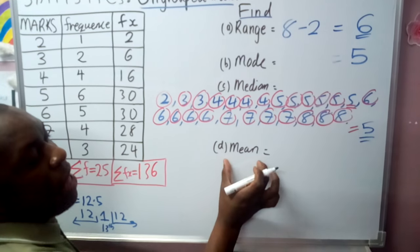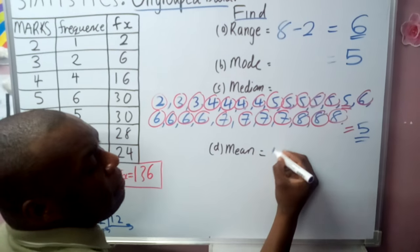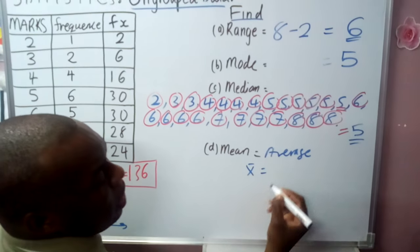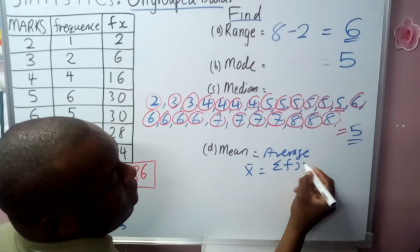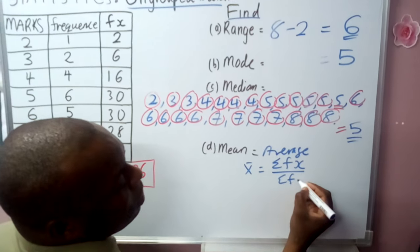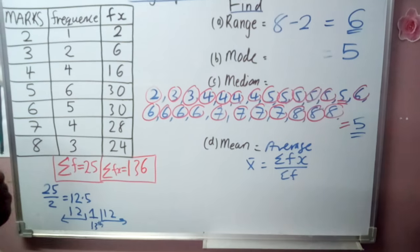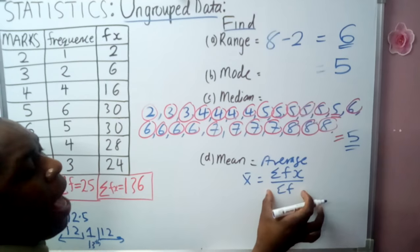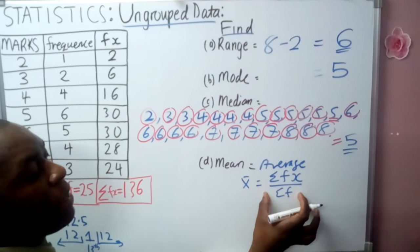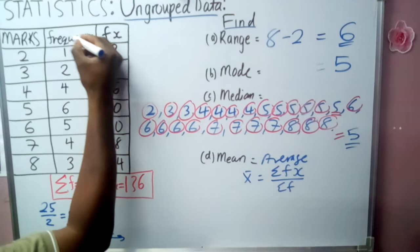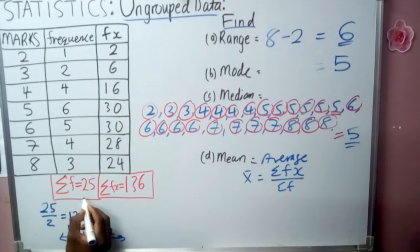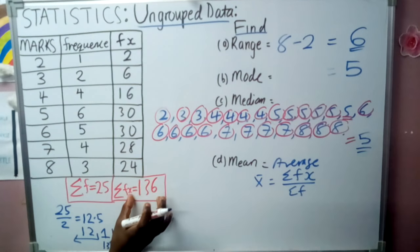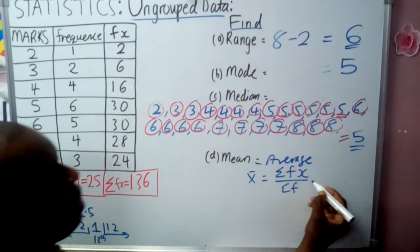D, we find the mean. We know mean means average. And average is the summation of all the fx over summation of the frequencies. That is the total sum of all the data divided by how many times all the data is repeating. So all the data we can see is repeating 25 times, and this data sums up to 136.